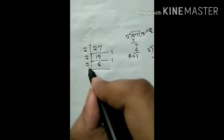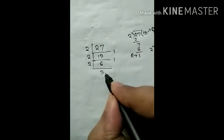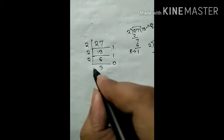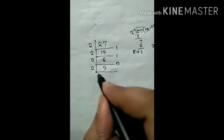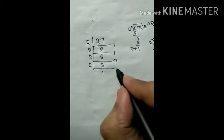Again we divide 6 by 2. 6 is divisible by 2. 2 times 3 is 6, so remainder is 0. Again we divide 3 by 2. 2 times 1 is 2. Remainder is 1.